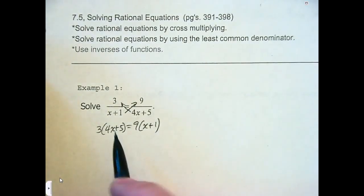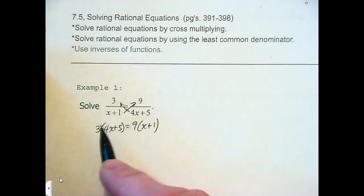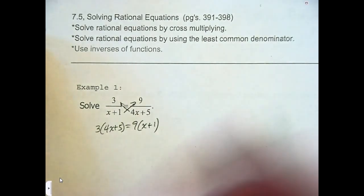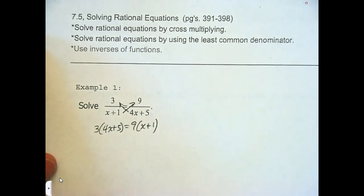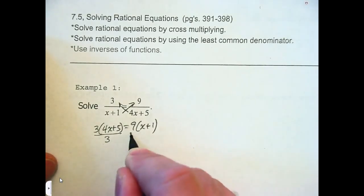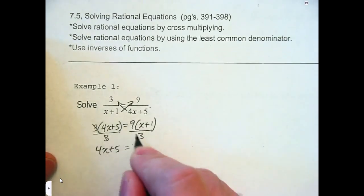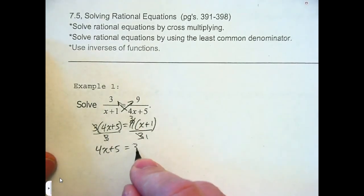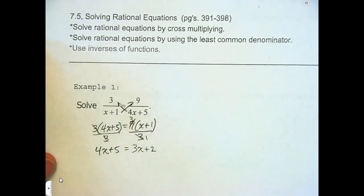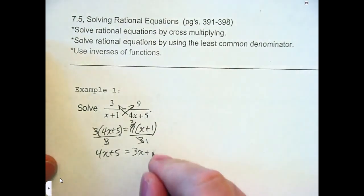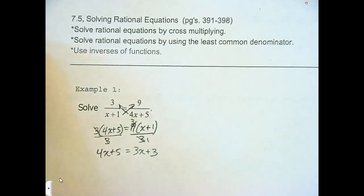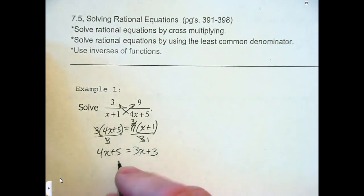From here you have two options. You can distribute — how many of you distributed? Or you can divide both sides by 3. I'm going to do what I think is a little faster, which is to divide both sides by 3. If you distributed, that's okay. You'd be left with 4x + 5 equals 3x + 3. From there, subtract 3x, subtract 5, and you get x = −2.